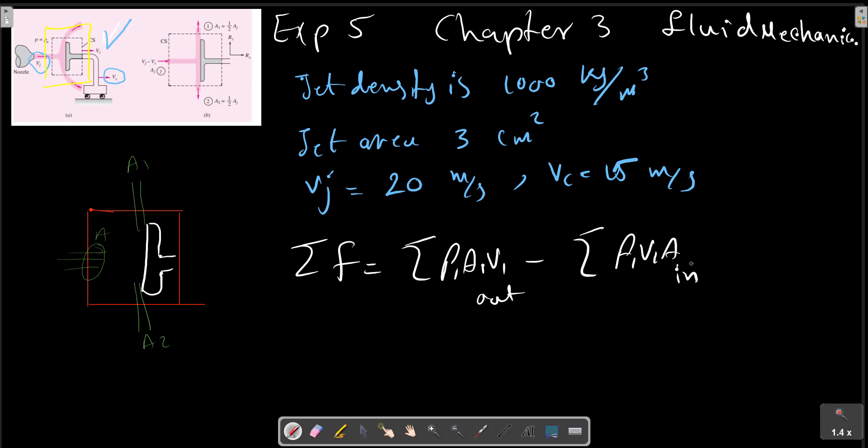As we said, the suggested control volume of the figure is shown also in this picture. Cut through the plate to expose the desired force RX and RY which is shown here. This control volume moves at speed VC and is at steady state relative to the plate. We must satisfy both mass and momentum conservation for the assumed steady flow patterns.